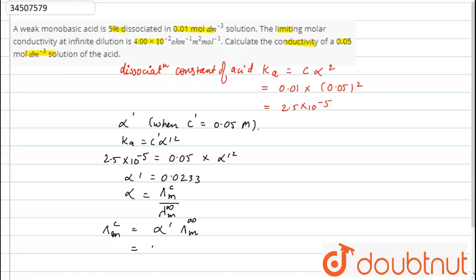So, that will be 0.0233 multiplied by 4 into 10 to the power minus 2. And when we solve this, we get this as 8.92 into 10 raised to the power minus 4 ohm inverse centimeter square mole inverse. So, this is our final answer. Thank you.